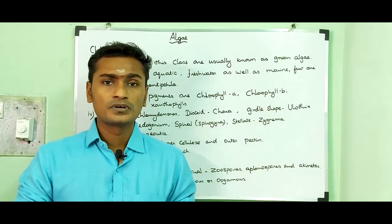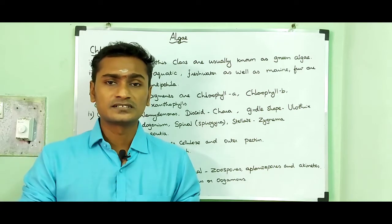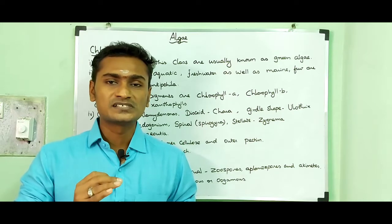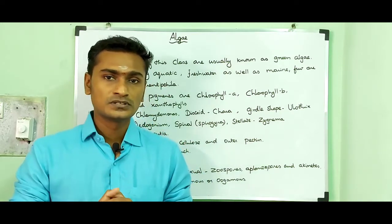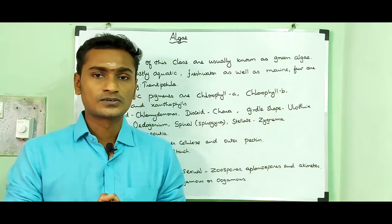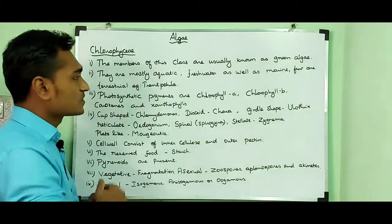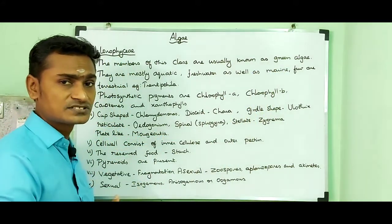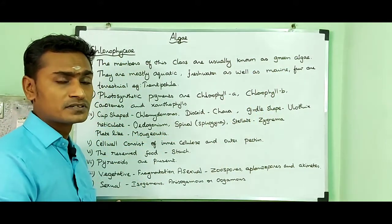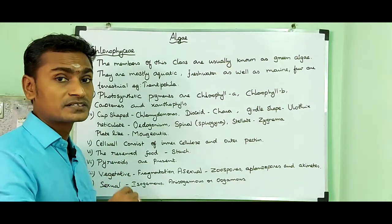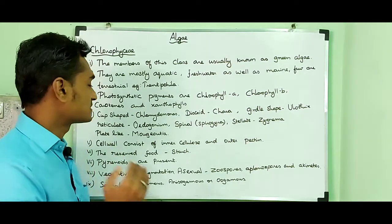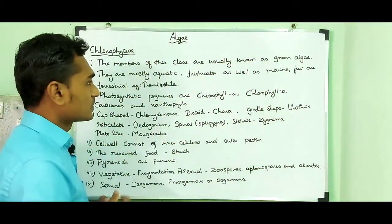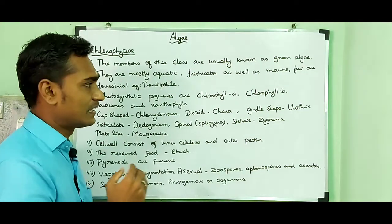In this video we are going to mainly concentrate on the salient features of three classes: Chlorophyceae, Phaeophyceae and Rhodophyceae. The members of Chlorophyceae are usually known as green algae because of the presence of chlorophyll pigment, which is predominantly present when compared to other pigments like xanthophyll and carotenoids.